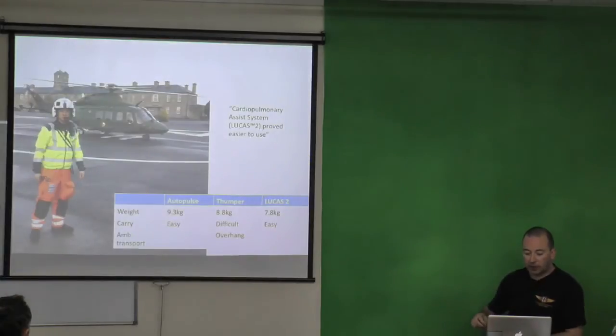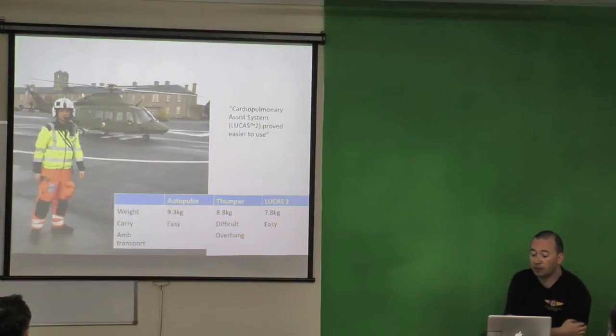Earlier as well, I mentioned a colleague of mine, Darren Figgis, who works on the aircraft in Ireland, and he's done a master's project, which has been presented as a poster and an oral presentation in the US. And he's in the process of submitting it for publication at the moment. But he got about 50 paramedics to compare the three devices and compare their attitudes towards them. So what he found is that the autopulse, like we said, is the heaviest. Lucas 2 is quite light. Some of them are easy to carry. Some of them are difficult to carry. And the biggest problem with the thumper was the overhang. But overall, the paramedics that he surveyed found that the Lucas 2 was the easiest device to use.